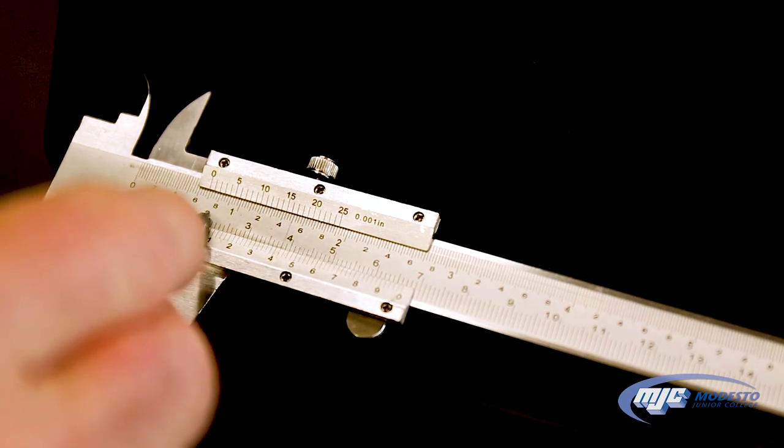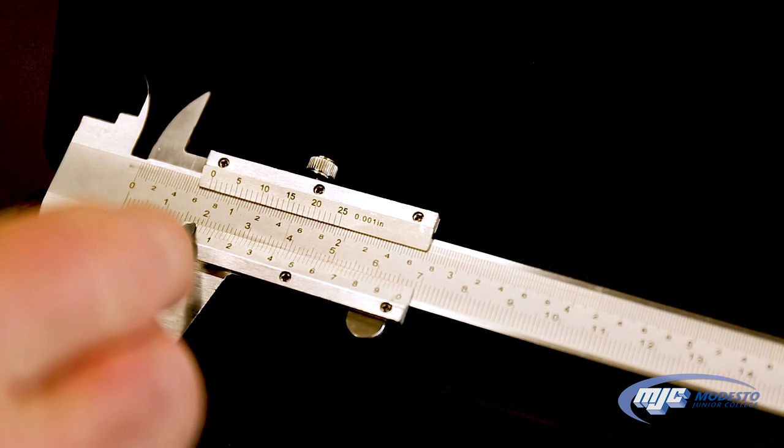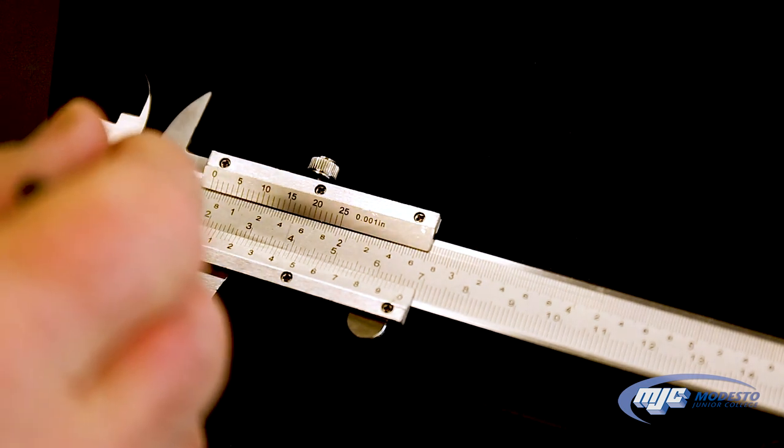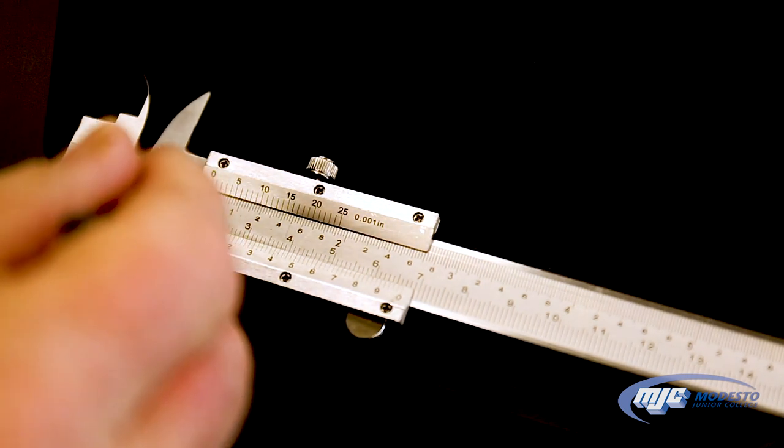Zero, one, two. So this line above the zero is between one and two centimeters. Next we go down a little bit farther and say, okay, each of these small lines is 0.1 centimeters.